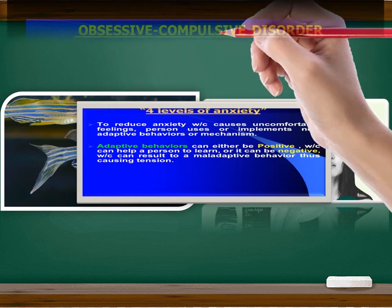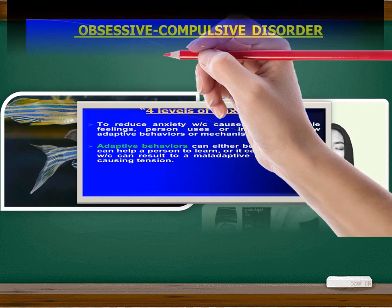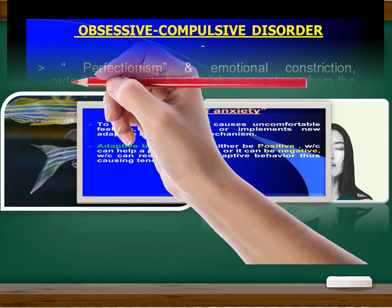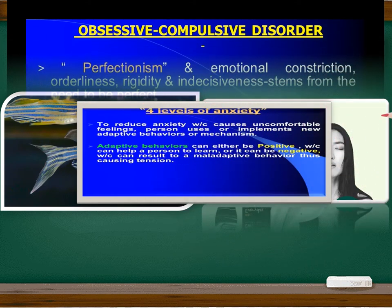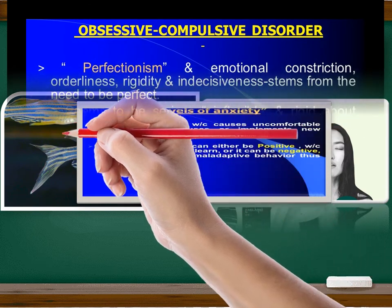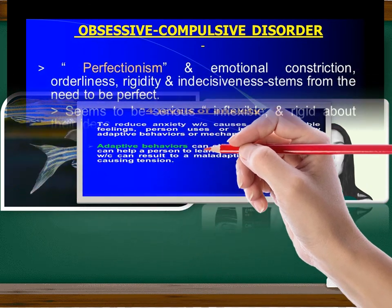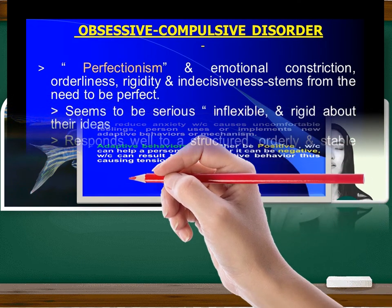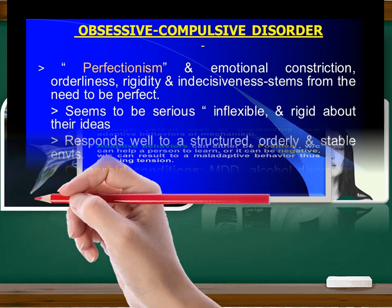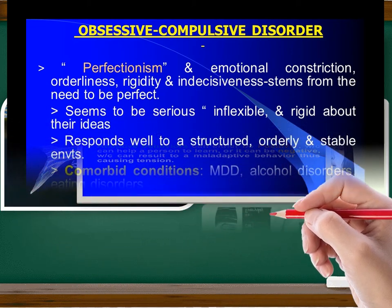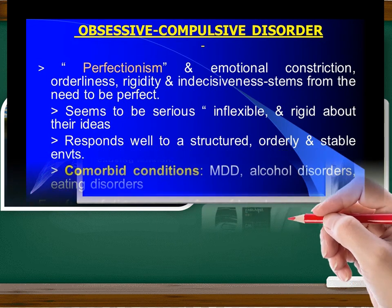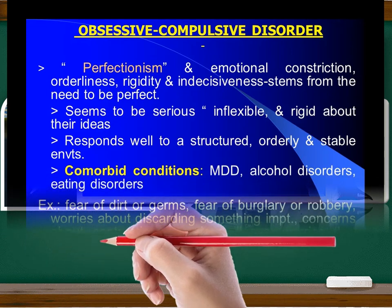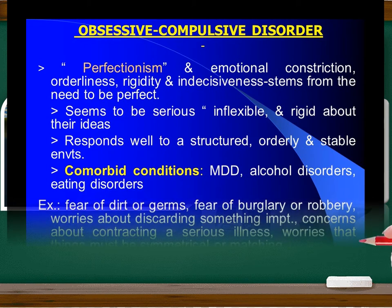Rationale: anxiety is communicated interpersonally — being with an anxious client can raise your own anxiety level. Relaxation exercises are effective, non-chemical ways to reduce anxiety. Independent use of techniques can give the client confidence in having some conscious control over his or her behavior. A frequent misconception is that anxiety itself is bad and not useful; the client does not need to avoid anxiety per se.